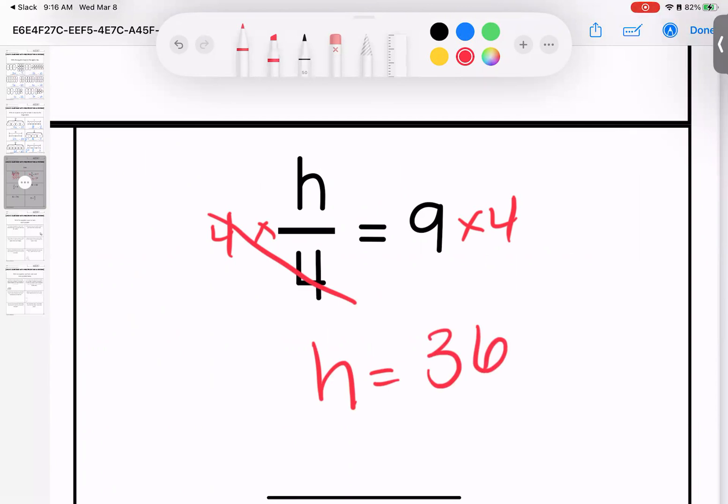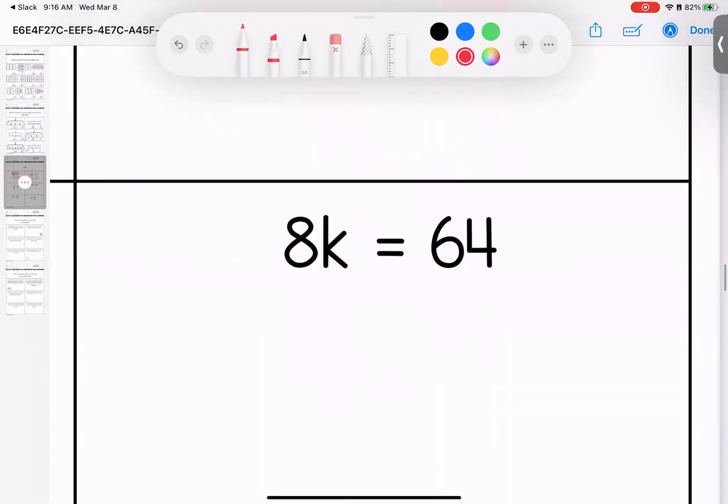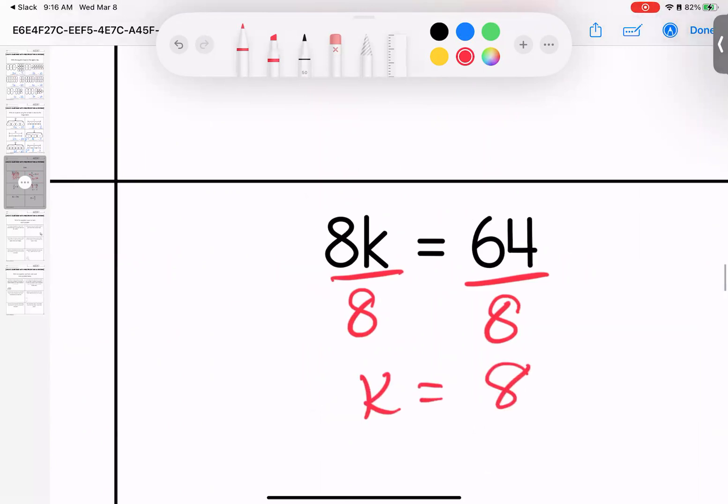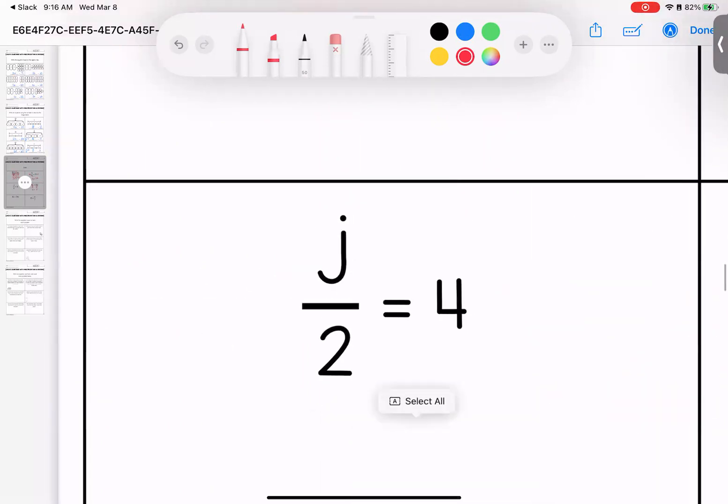36 divided by 4 equals 9. It checks out. Sticky numbers, I divide. K is equal to 8. Fractions mean division. I multiply. J is equal to 8.